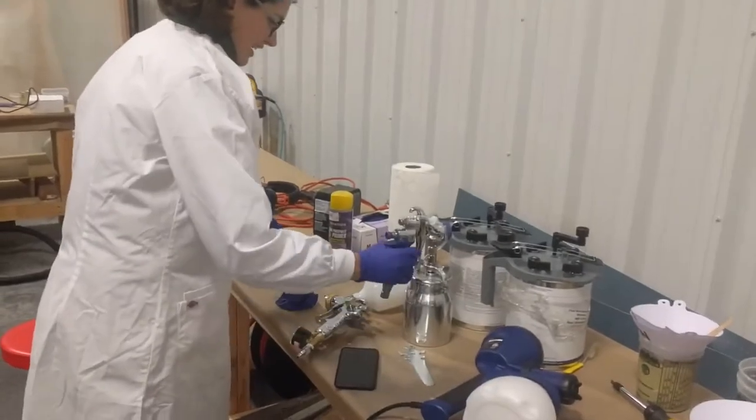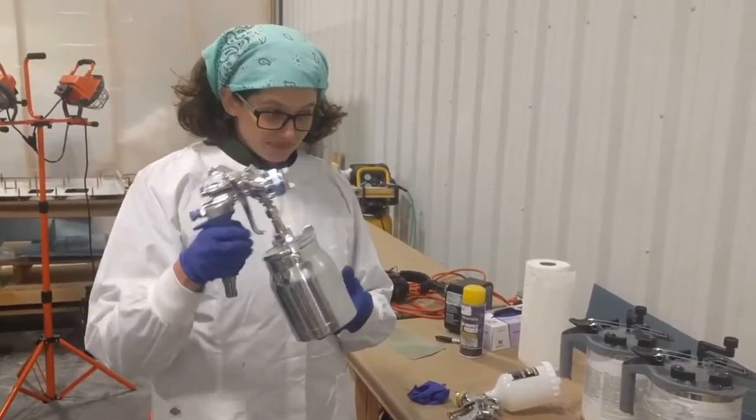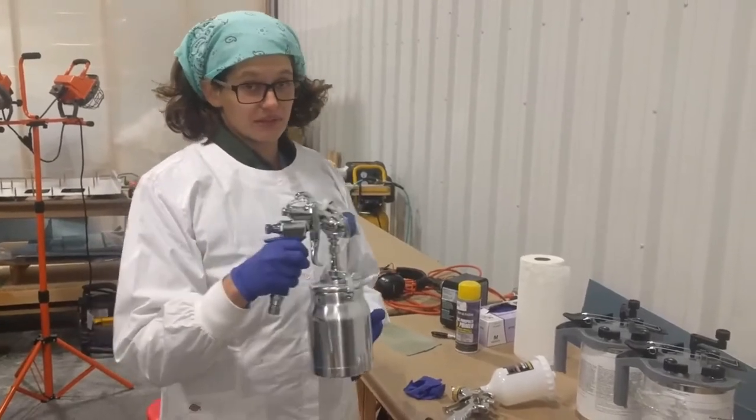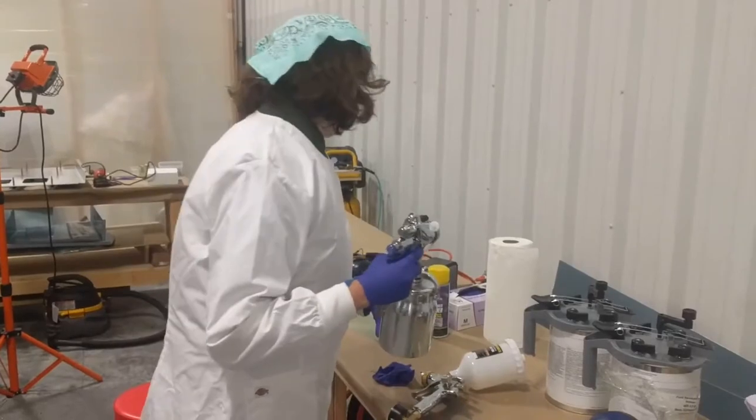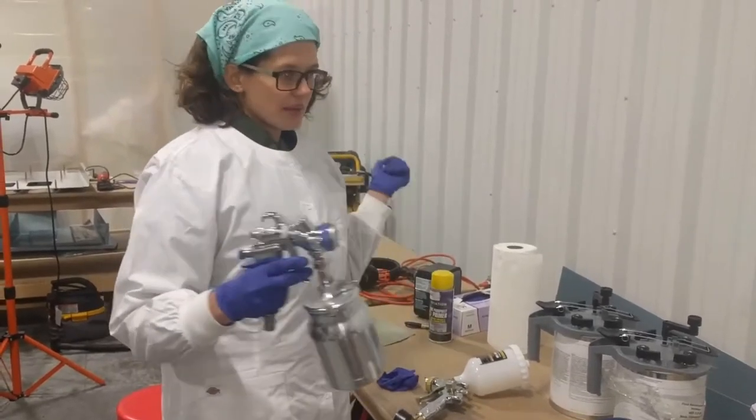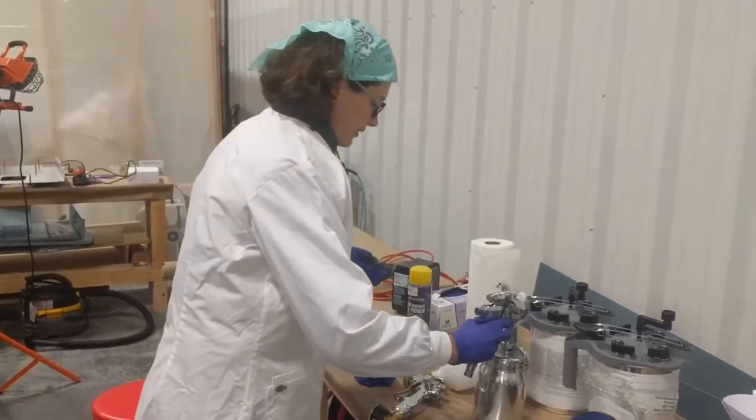The second gun we're going to try is this Fuji spray suction feed gun. The gun itself costs $300-something dollars standalone on Amazon and you also have to buy this special turbine system. The Mini Mic 4 is what we're using and it costs about $800 total altogether.